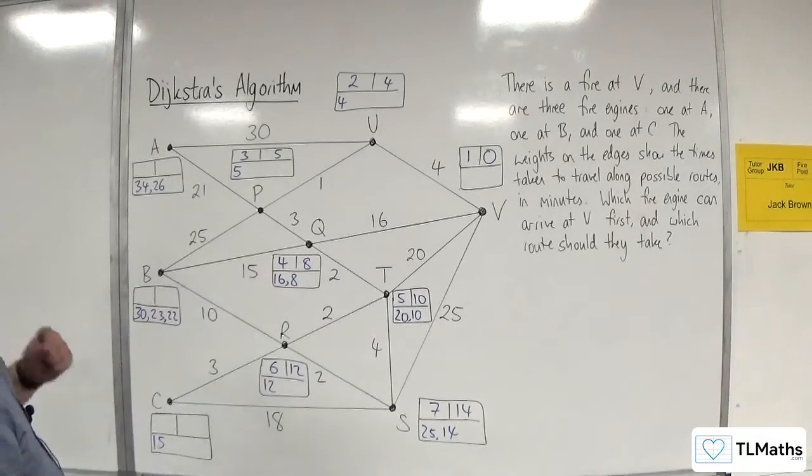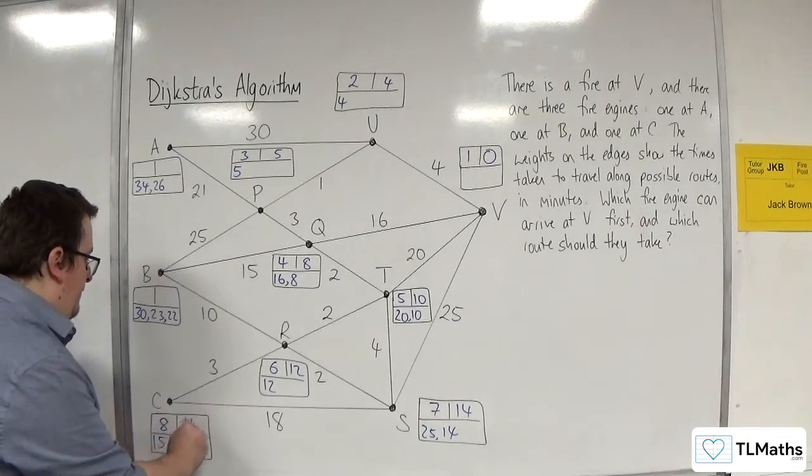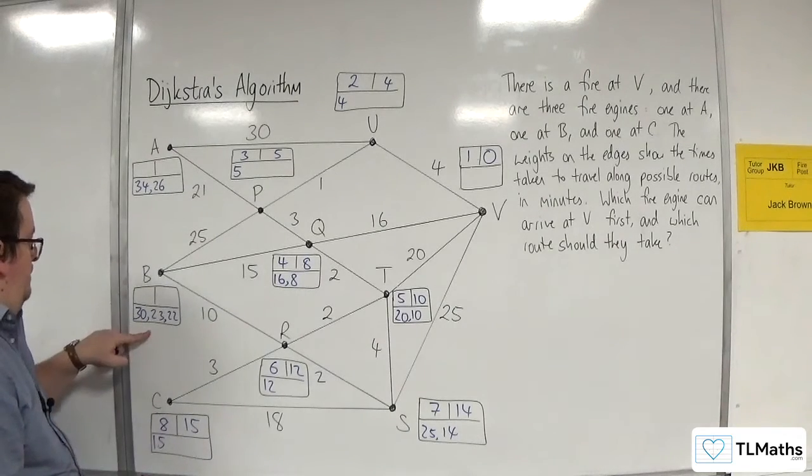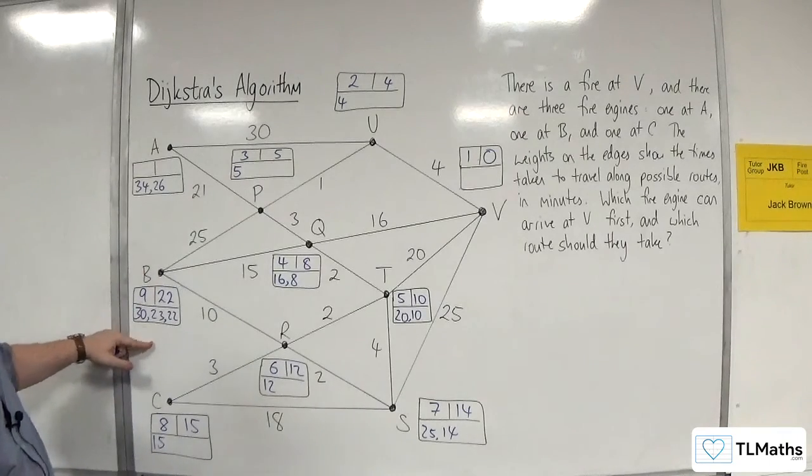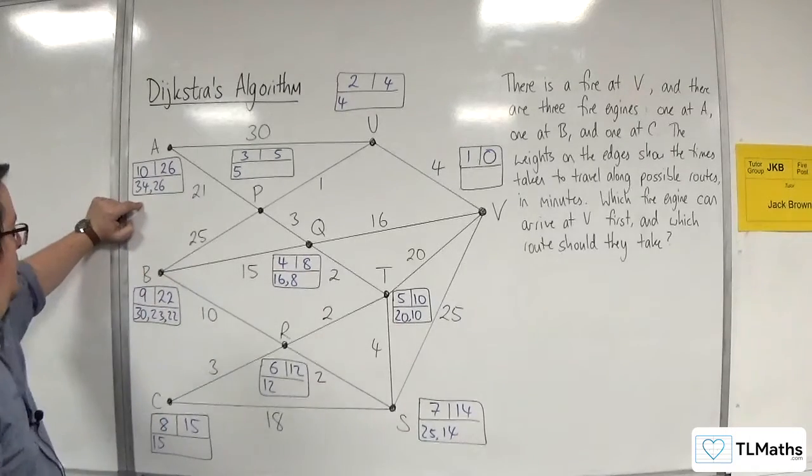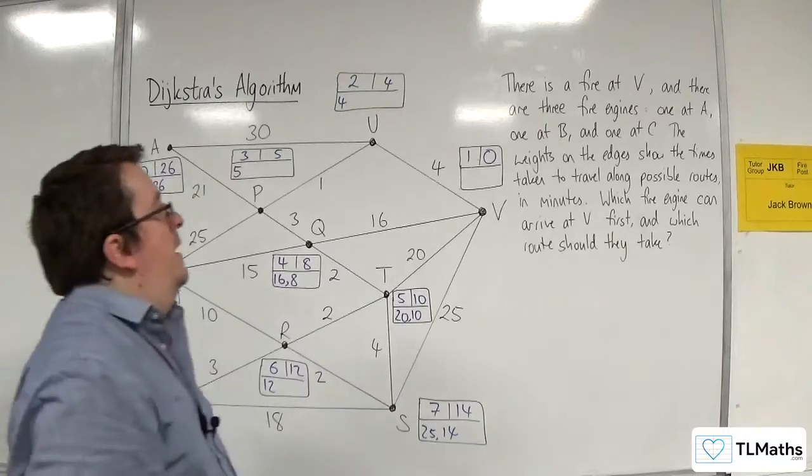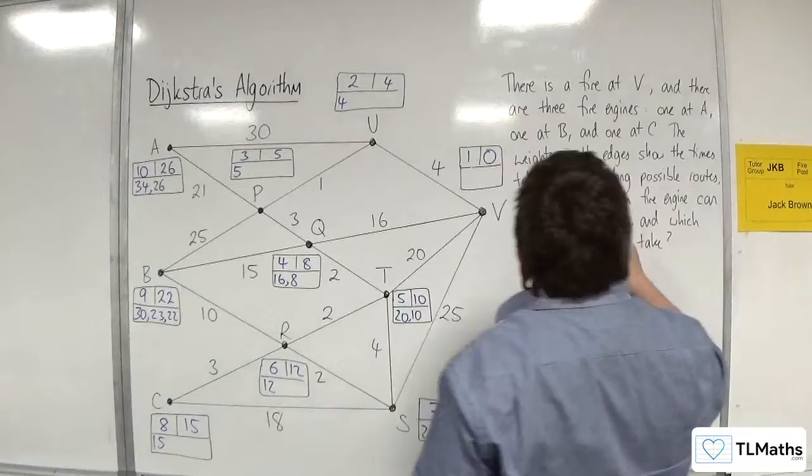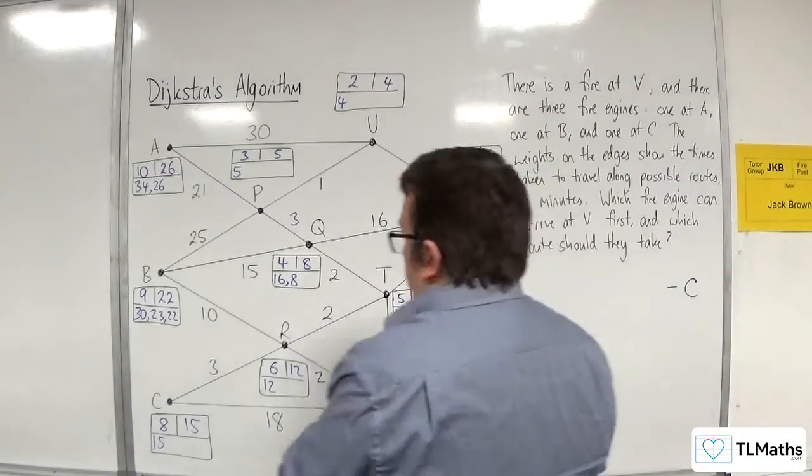So next shortest is the 15. So that gets labelled with 8, final value 15. And there's no roots out of it to consider. The next shortest is this one, so that gets labelled with 9, and final value 22. There's no roots out to consider. And this one gets labelled with 10, and 26 is the final value. There's no other roots out. So the answer is, it is C. So C is the fire engine that can arrive at V first, and the route that they should take.